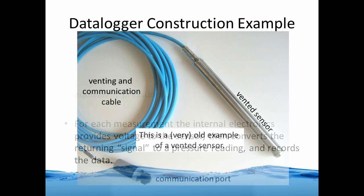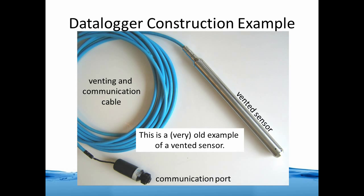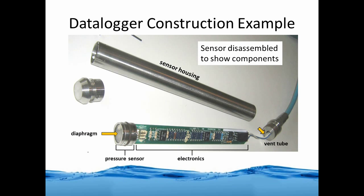On this slide you'll see an example of a vented sensor — quite an old example — showing the blue communication and venting cable on the left and the cylindrical stainless steel sensor on the right. The next slide shows a sensor that's been dismantled, where you can see the internal electronics as well as the pressure sensor and diaphragm, and the connection to the vent tube indicated by the small yellow arrow on the right.